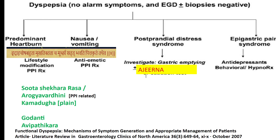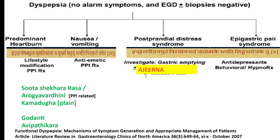Based on my clinical experience, patients who have developed gastric symptoms due to regular consumption of proton pump inhibitors may not respond well to PPIs but respond well with Arogyavardhini. Arogyavardhini with Kamadugha is the usual prescription. For patients with epigastric pain syndrome — pain in the epigastric area — the Gastroenterology Clinic of America classifies this as typical of a different category, with treatment suggested as antidepressants and behavioral suggestions.